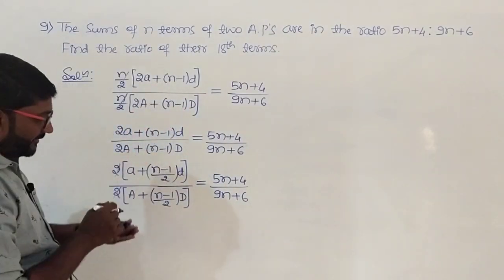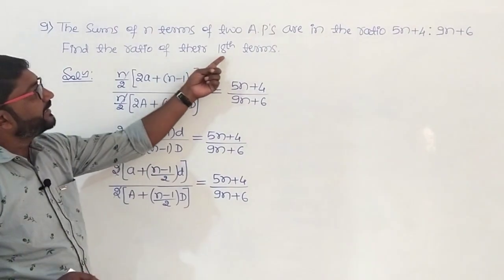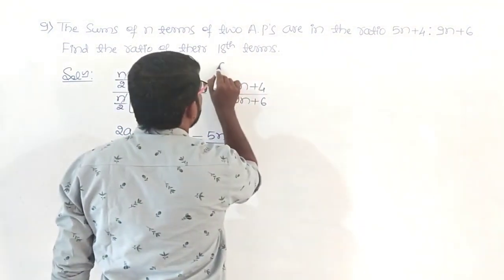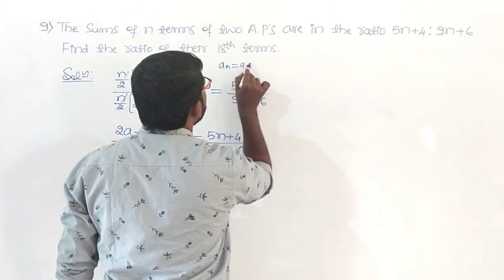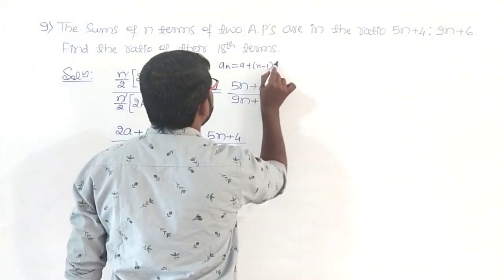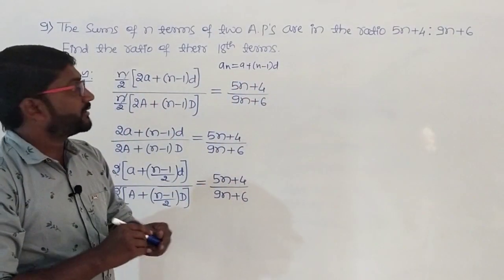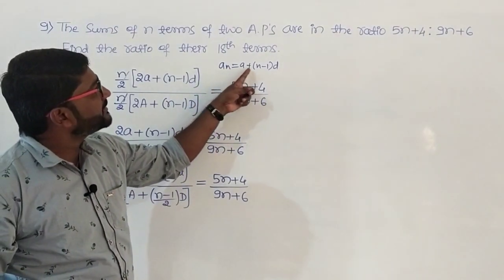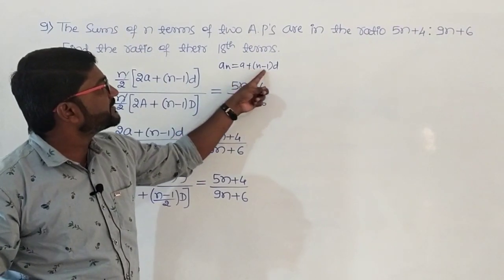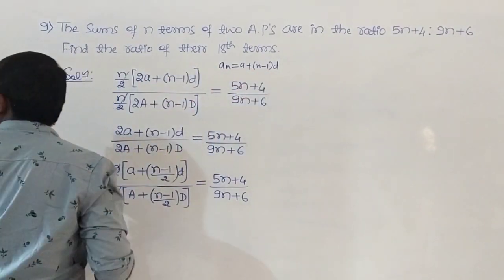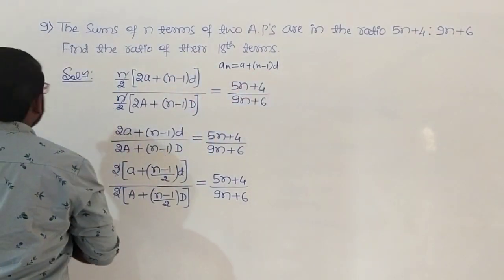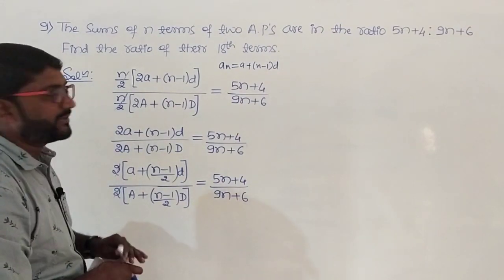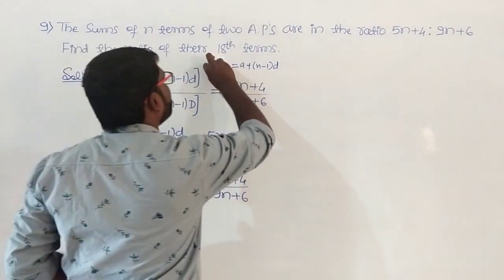The 2s cancel. We need the ratio of their 18th terms. Here an equals a plus n minus 1 into d. We need the 18th term, so replace n by 18: a18 equals a plus 17d. Overall we need to find a plus 17d divided by A plus 17D.